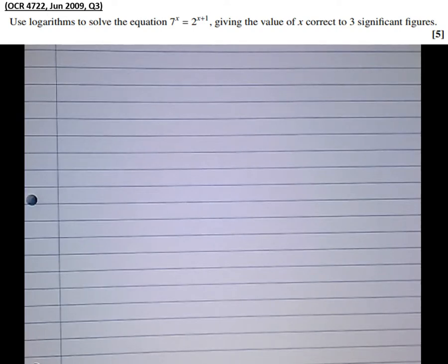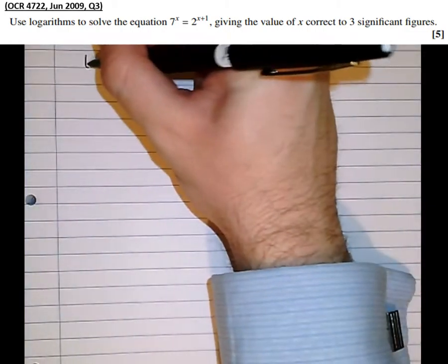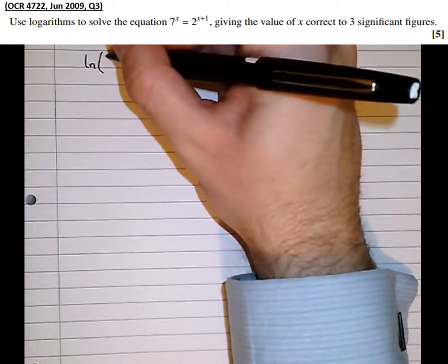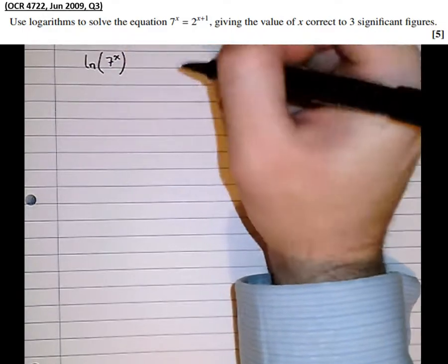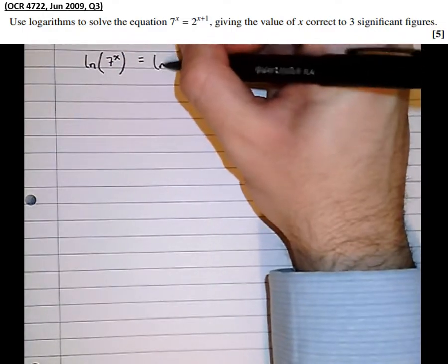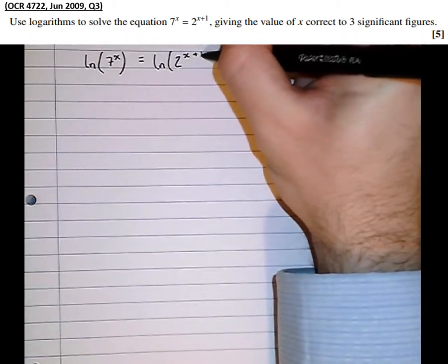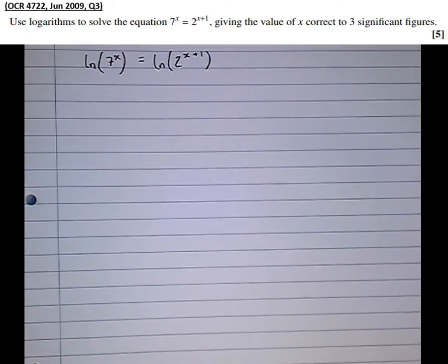Well the first thing to do, to get the x out of the power, we're going to take logarithms of both sides. Now I'm going to use natural logarithms, that's log base e. Any base will do, but this one's probably the easiest to use, plugging it in the calculator. So natural logarithms of both sides.